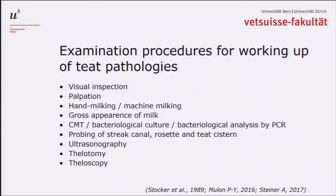I would like to summarize the examination procedures we usually use for working up teeth pathologies. They include visual inspection, palpation, hand milking or machine milking — though of course you cannot do that all the time; if you have a perforating laceration, you won't try milking with the machine. We have to look at the milk and determine whether mastitis is present. We can probe the streak canal, the rosette and the teeth cistern. A very important instrument nowadays is ultrasonography, which has completely replaced radiography. In some cases, we may even decide to perform a telotomy or a teloscopy for working up certain cases.